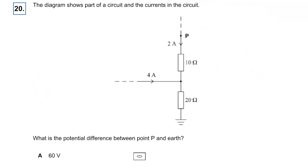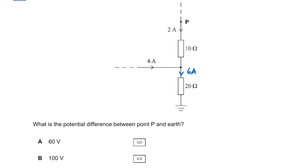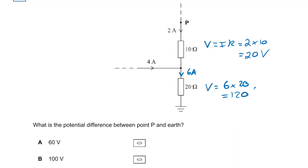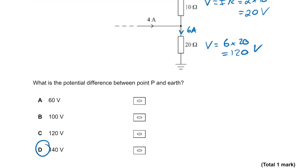Question twenty: part of a circuit where six amps must flow down due to Kirchhoff's first law. The potential difference between P and earth comes from both resistors: V equals IR gives two times ten equals 20 volts, and then six times 20 equals 120 volts. Total PD is 20 plus 120 equals 140 volts. The answer is D.